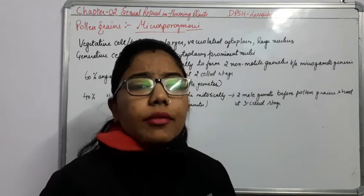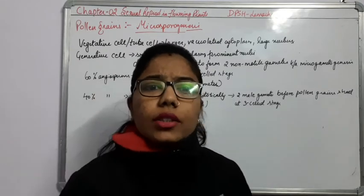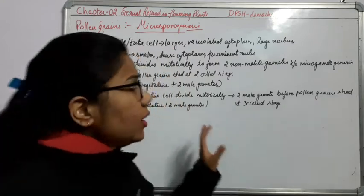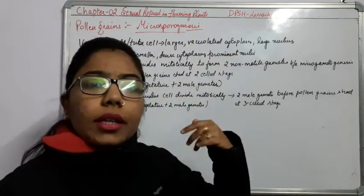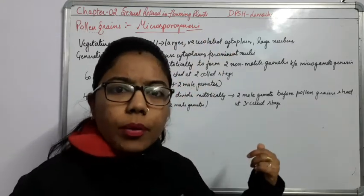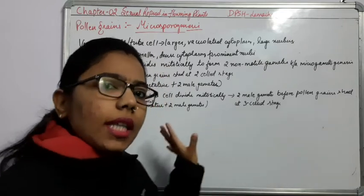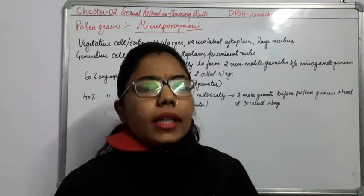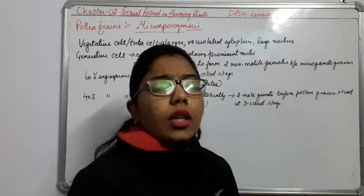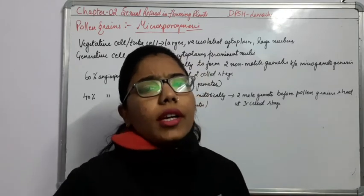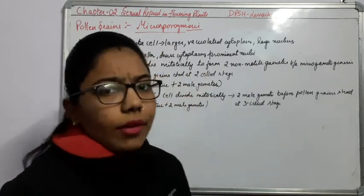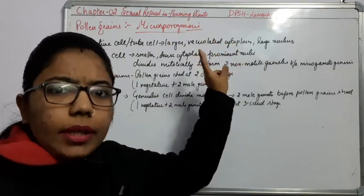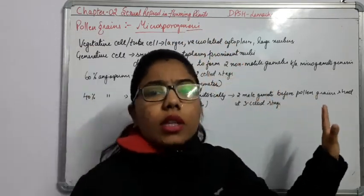What are the flowering plants? We know that angiosperms are the flowering plants. Wherever there is a flower, there will be reproduction — sexual reproduction — in which we will get the male gamete as well as the female gamete. When we have to go for sexual reproduction, what is the requirement? Male gamete as well as the female gamete.